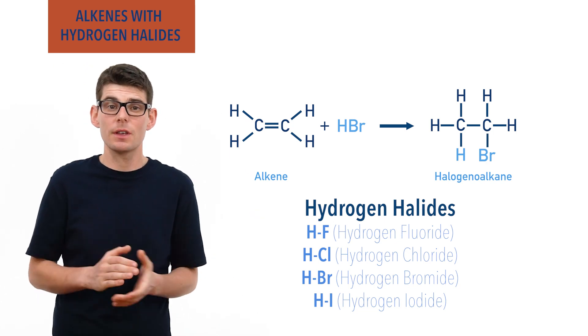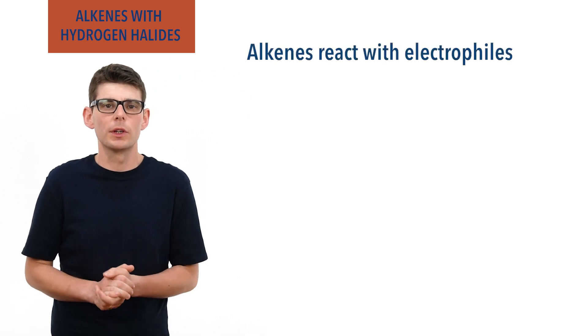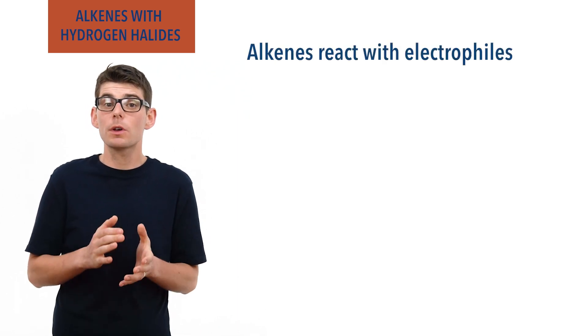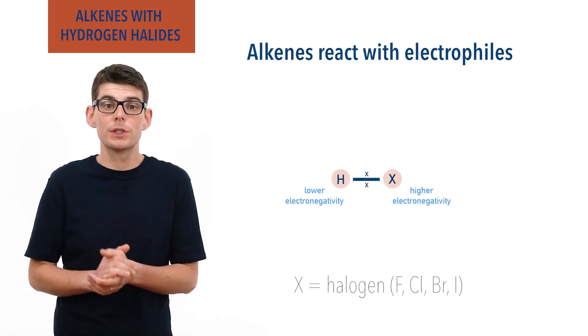To get any reactions started with an alkene, we need to have an electrophile. A hydrogen halide molecule is polar. This is because the halogen will always have a higher electronegativity than the hydrogen it is bonded to.